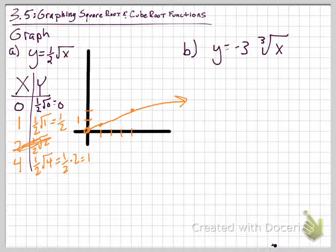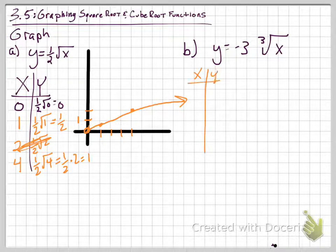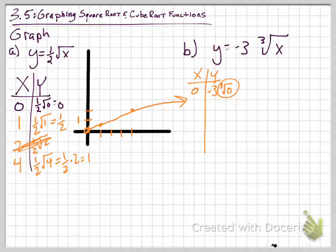But what I want to do now is move on to the cube root function that we have before us here. We're going to do the same thing and make a table for x and y. And I'm going to start by plugging in 0. If we do negative 3 times the cube root of 0, you have to realize the cube root of 0 is 0, and negative 3 times 0 will give us 0 as an output.